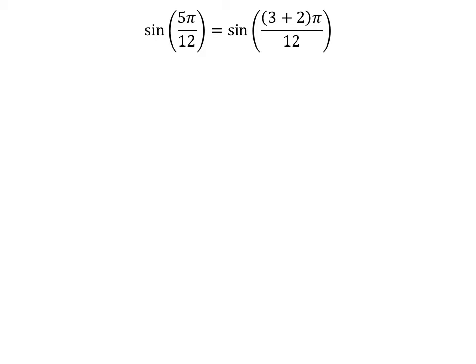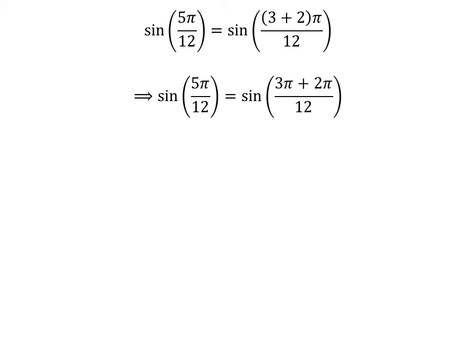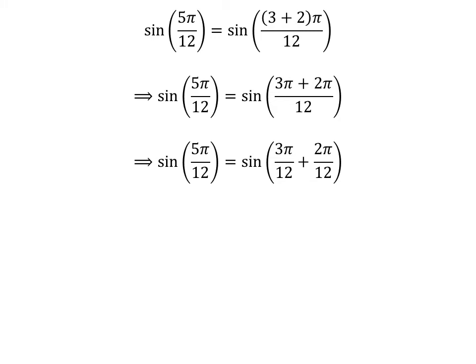We know 3 plus 2 is equal to 5, so sine of 5 times pi upon 12 is equal to sine of 3 plus 2 times pi upon 12. Expanding the numerator, the fraction 5 times pi upon 12 can be expressed as the sum of two fractions: 3 times pi upon 12 and 2 times pi upon 12. Cancelling out the common factors gives us sine of 5 times pi upon 12 is equal to sine of pi upon 4 plus pi upon 6.